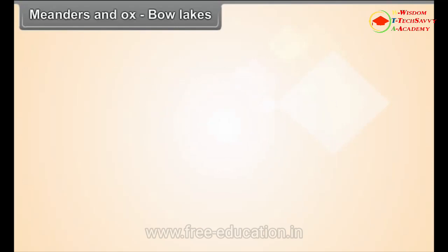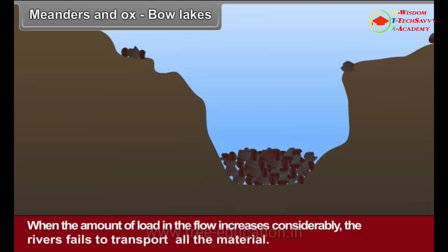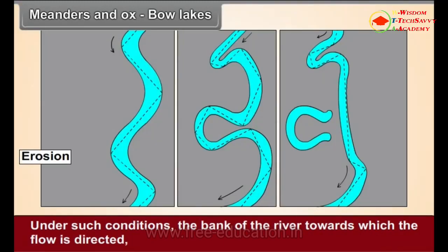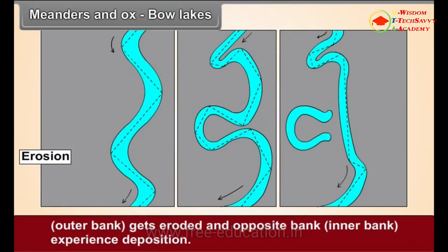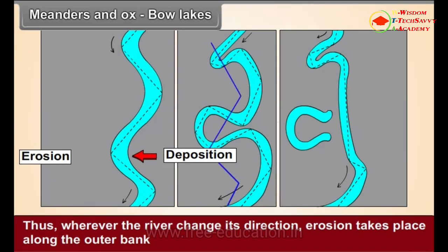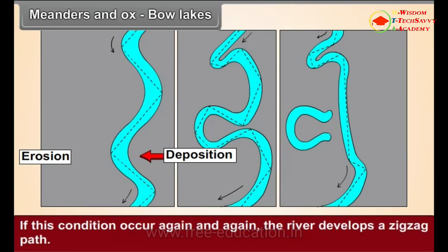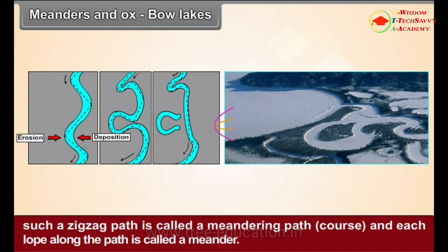Meanders and Oxbow Lakes: When the amount of load in the flow increases considerably, the river fails to transport all the material. Small elevated portions or obstacles can cause a change in the direction of the flow. The bank towards which the flow is directed (outer bank) gets eroded and the opposite bank (inner bank) experiences deposition. Wherever the river changes its direction, erosion takes place along the outer bank and deposition along the inner bank. If these conditions occur repeatedly, the river develops a zigzag path called a meandering course, and each loop along the path is called a meander.